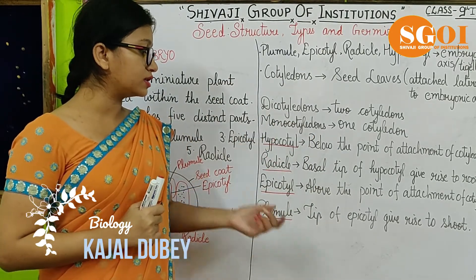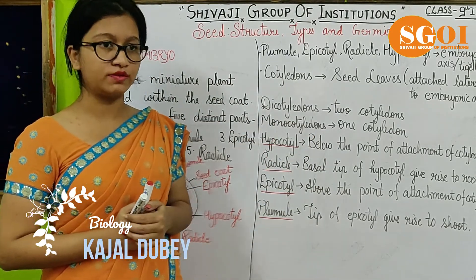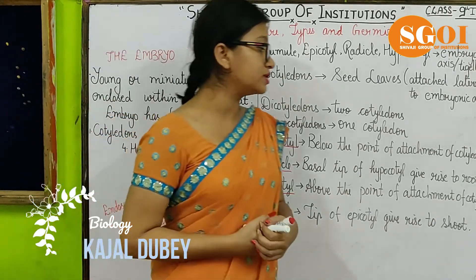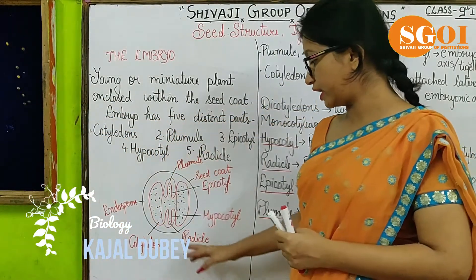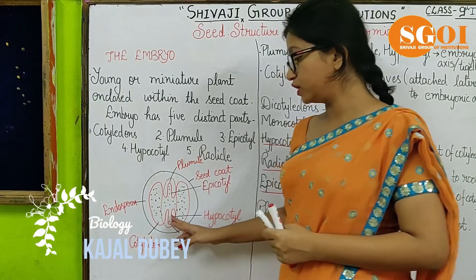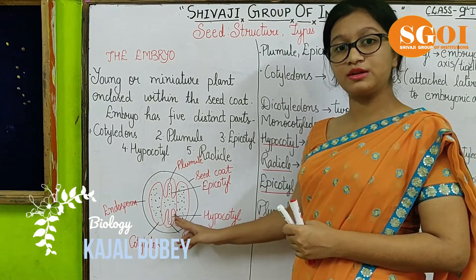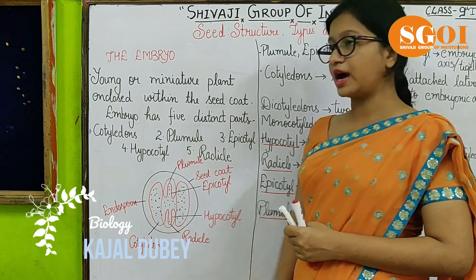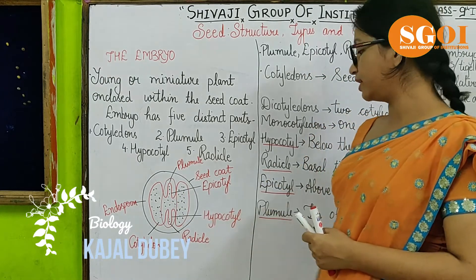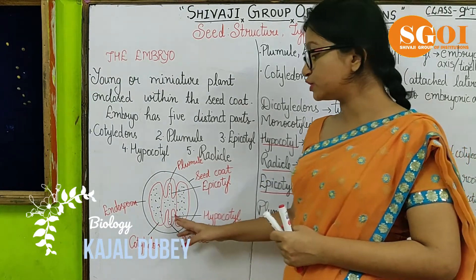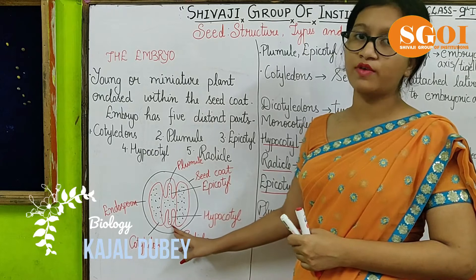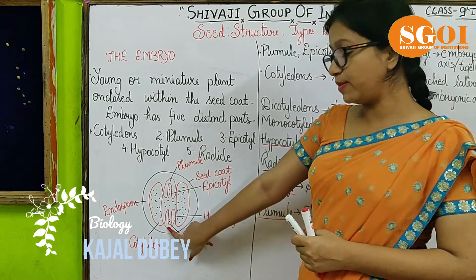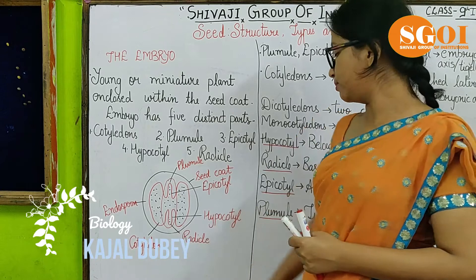Now let's discuss the four important parts of the embryonic axis. First, hypocotyl — hypocotyl is present below the point of attachment of the cotyledon. As you can see, the below region is called hypocotyl. Second is the radicle, which is present at the basal tip of the hypocotyl.